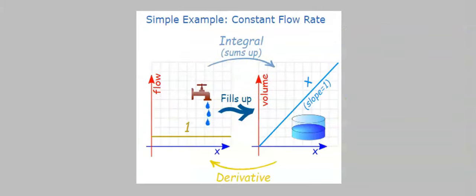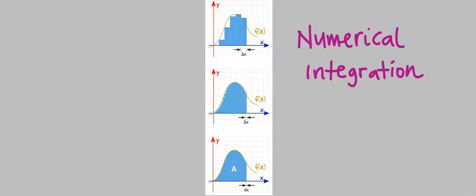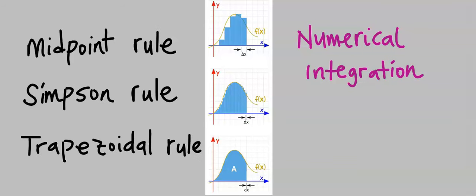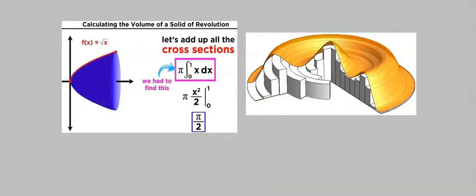For constant flow rate, the slope of the function is one. In numerical integration, for example, the midpoint rule, Simpson's rule, and trapezoidal rule can be used to calculate irregular areas and volumes of components, which we are going to see in subsequent videos. Differentiation and integration complement each other in calculus in the applications of area and volume.